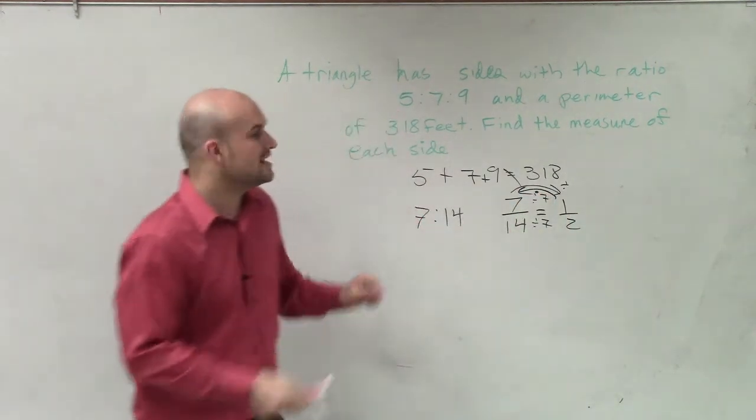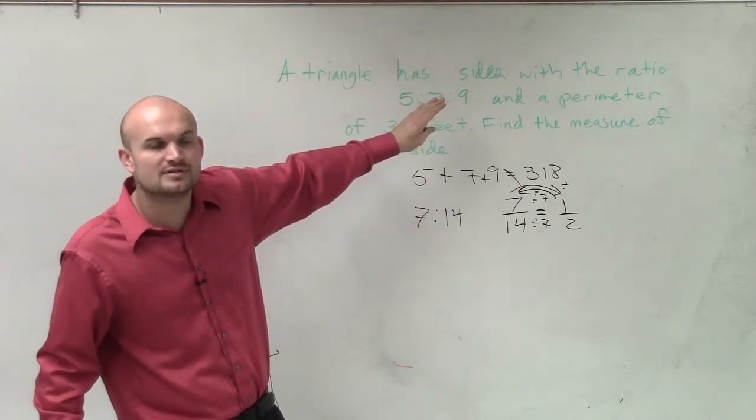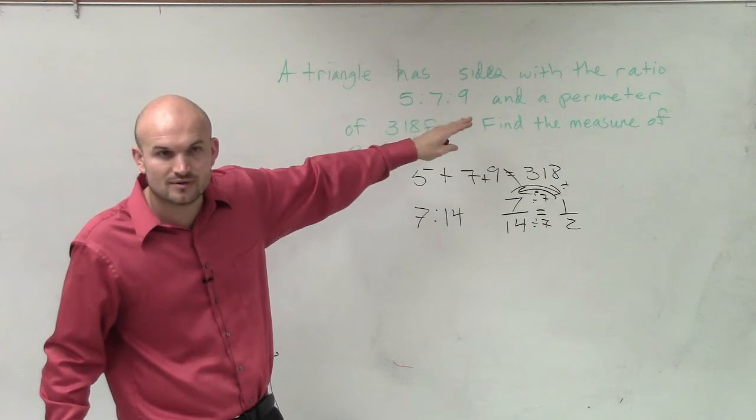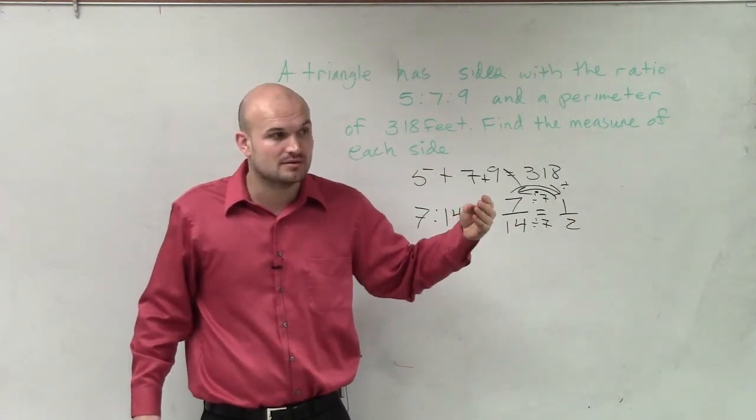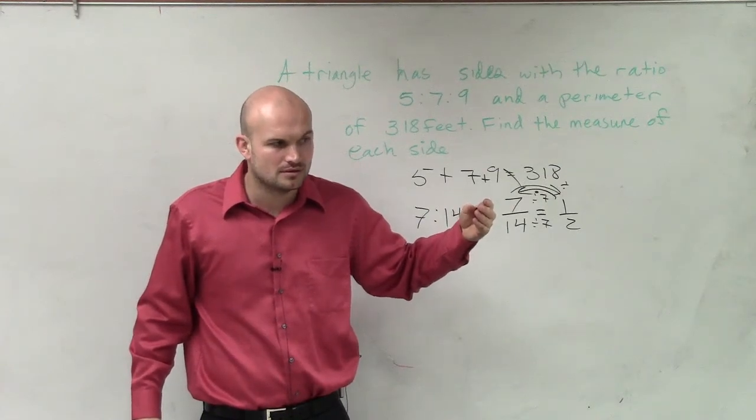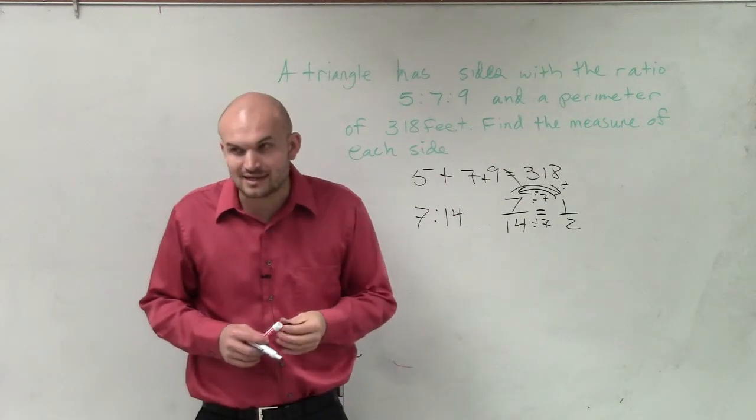So I'd multiply by 7. So ladies and gentlemen, this is a reduced rate or a simplified extended ratio. So what I need to do is I need to multiply it by a number.